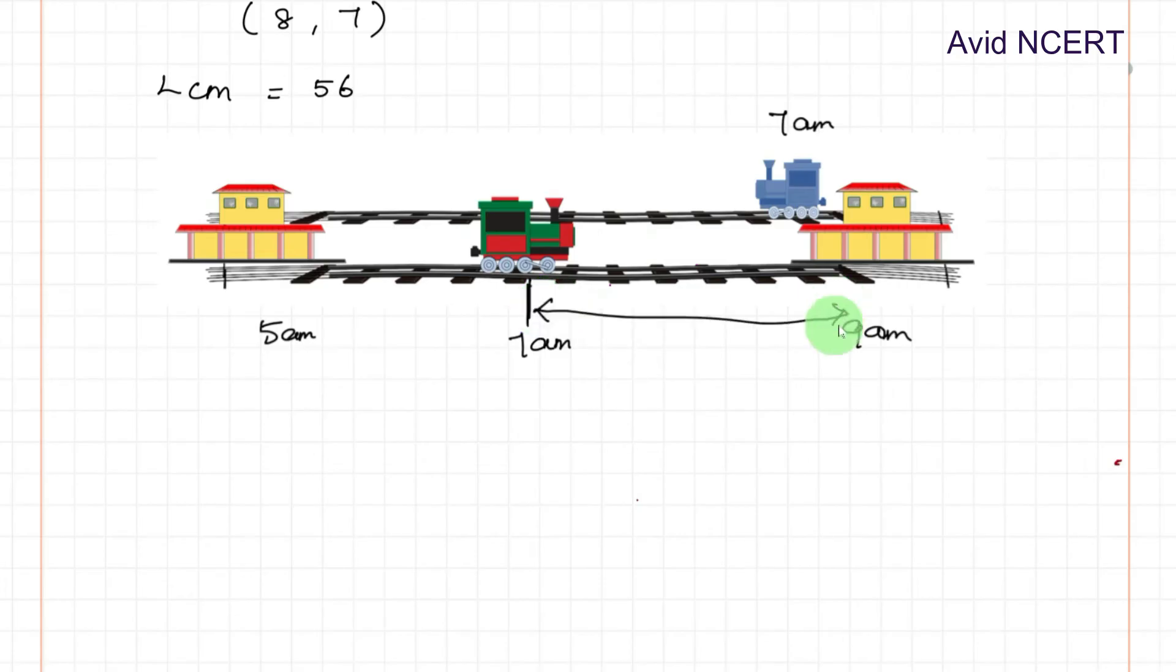This remaining distance is the distance train A and train B can meet. Since the total distance from station A to station B is 56 kilometers, we are finding only for this remaining distance, which is 28 kilometers.